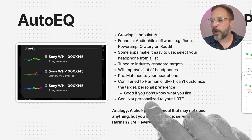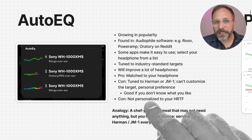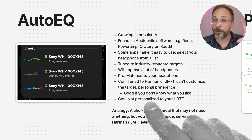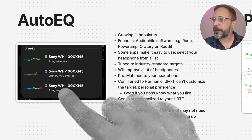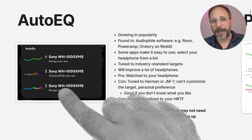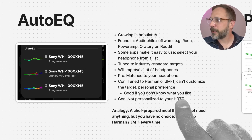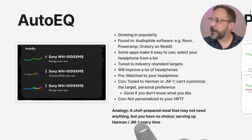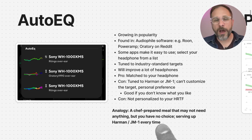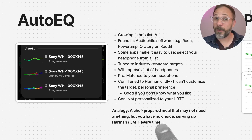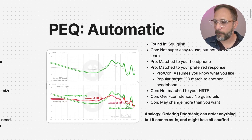Another point is that auto EQ doesn't incorporate your own HRTF — your own human anatomy. This is a general profile designed for your headphone, but it's designed for a generic measurement rig to sound ideal, and your HRTF is probably going to be a little bit different. My analogy: using an auto EQ profile is like having a chef-prepared meal that might be perfect out of the box, but you don't really have a whole lot of choice. They're serving up Harman target every time. It probably is going to sound better than your base headphone, but that leads us into the next forms of EQ.